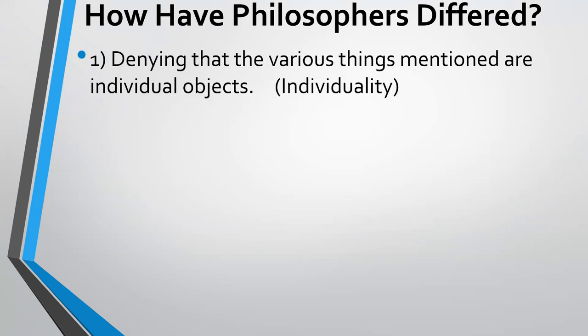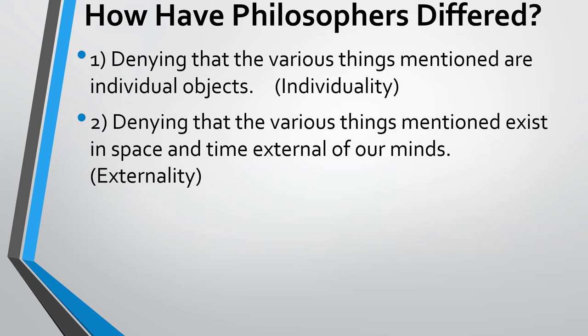How have philosophers differed on various topics we've just introduced? One thing is that they deny that the various things mentioned are actually individual objects — saying that no things exist, or that in reality only one thing exists. That's the topic of individuality we are exploring. Another way philosophers have differed from the common Western metaphysic is to deny that the various things exist in space and time external to our minds — denying that there really are buildings, chairs, trees, cats that exist apart from what we think. That's the topic of externality: are there things external to our minds?